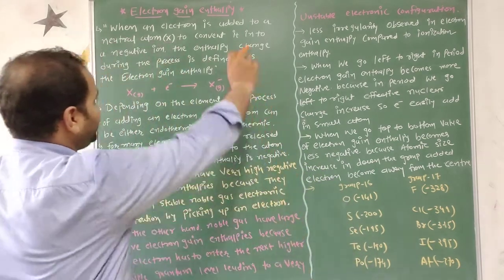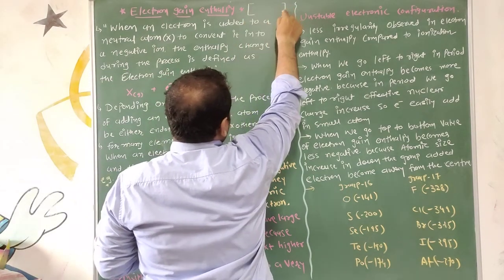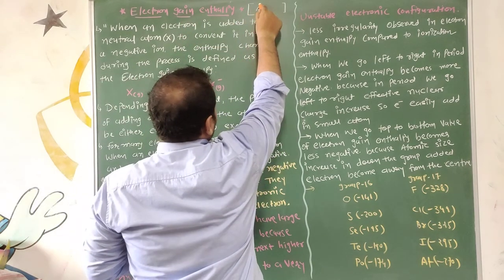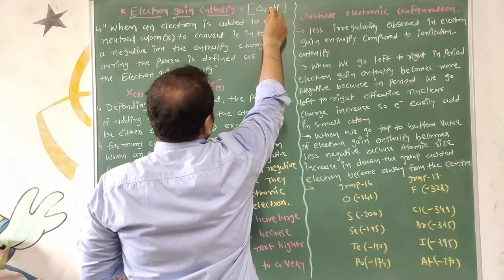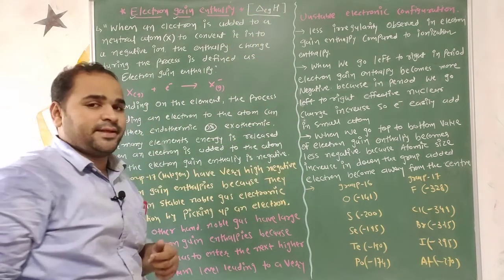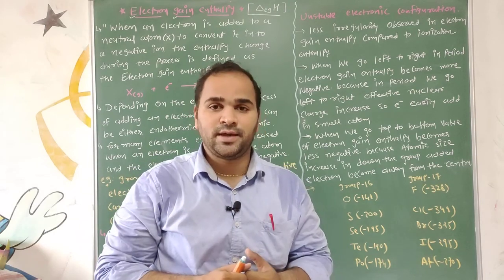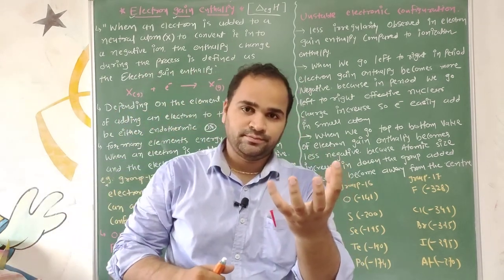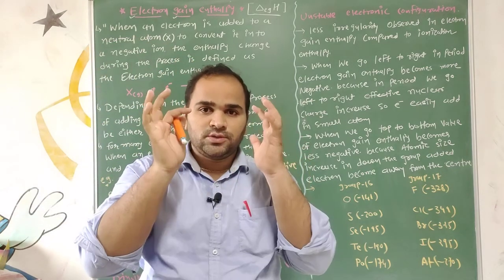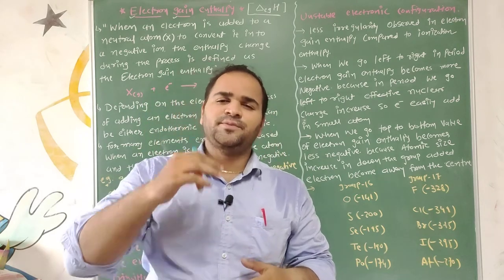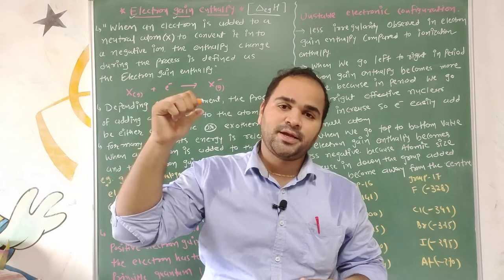Today we need to look at electron gain enthalpy. So the first thing is how we indicate electron gain enthalpy — enthalpy means delta H, so electron gain enthalpy is represented as delta EGH. Electron gain enthalpy: if you have a neutral atom in gaseous state and you add an electron to it, the enthalpy change obtained — whether energy is produced or energy needs to be given — that enthalpy change is called electron gain enthalpy.